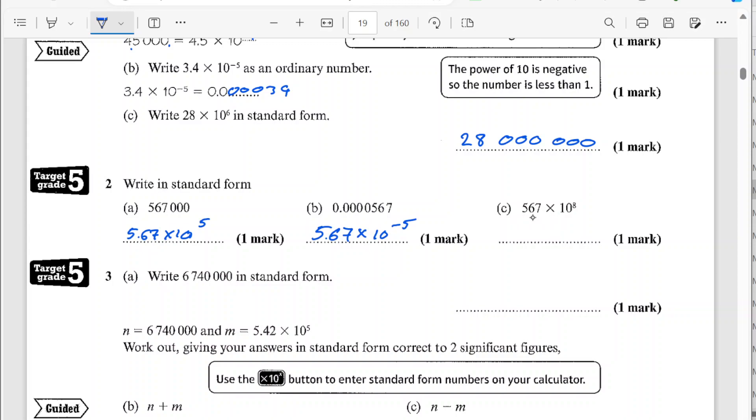Okay, so part C, this one doesn't have any decimal points in, so I'm just going to be adding 8 zeros. So 5, 6, 7 with 8 zeros. So I'm going to add 2 and then 6 more. 1, 2, 3, 4, 5, 6.